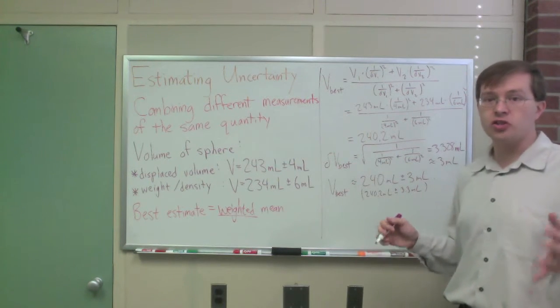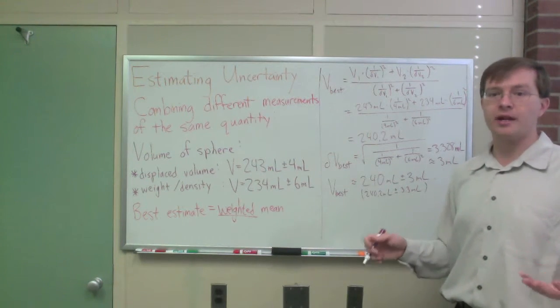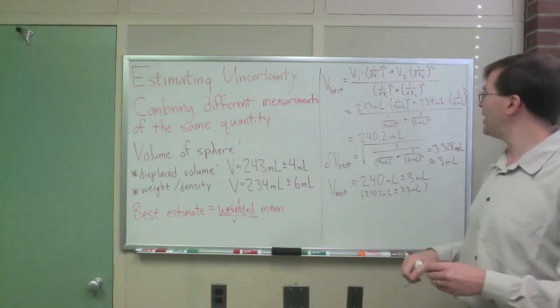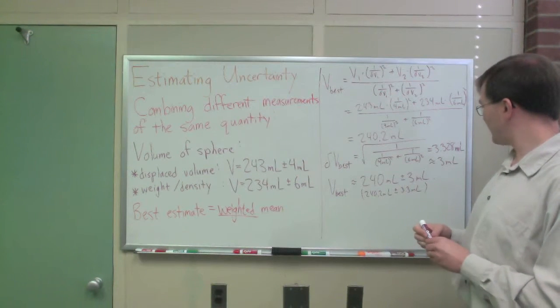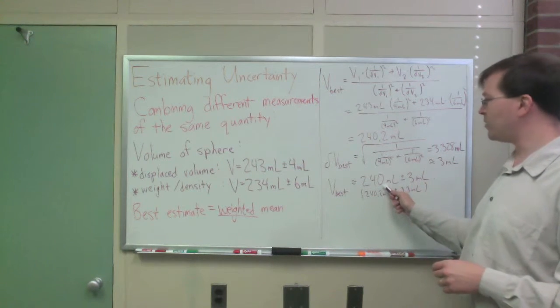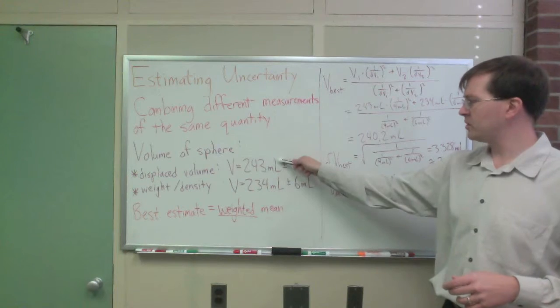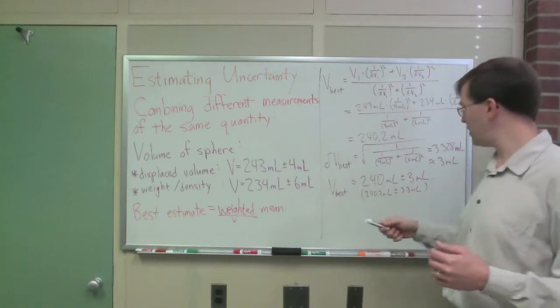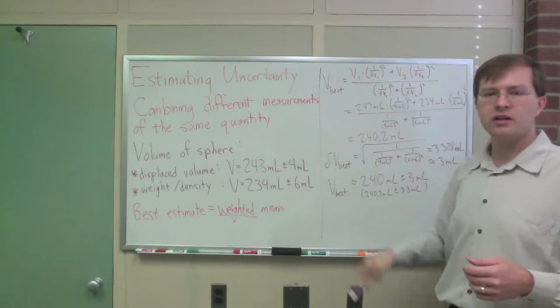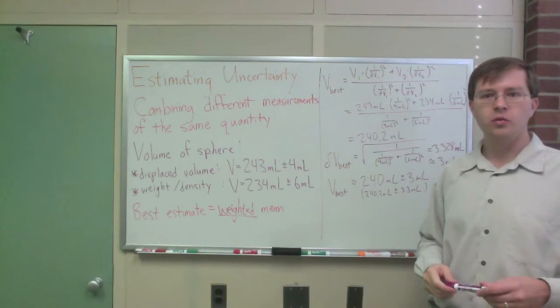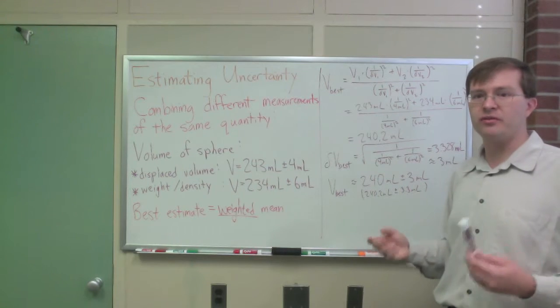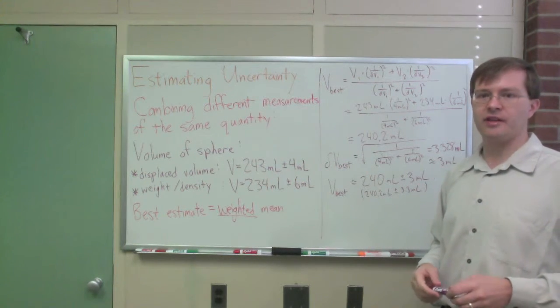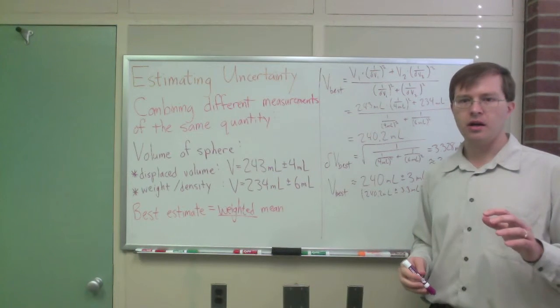Again, assuming independent, normally distributed, random errors. This is the best estimate for the volume and your confidence in the volume at that point. It's interesting to note, I guess, that the value we got is a little bit closer to the data point with a smaller uncertainty, as you'd hope. And the uncertainty we have in the end is a little bit lower than both of the uncertainties that went into what we started with. That means that we've, by combining these, we've gotten a slightly better estimate and we're pretty confident in the result. That's great.